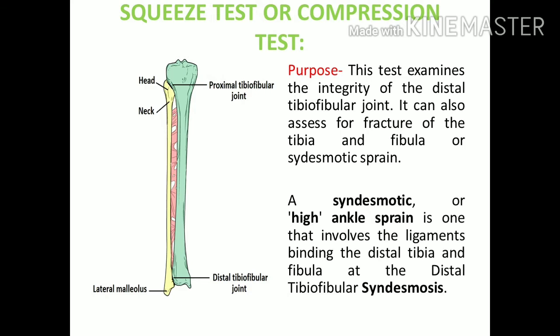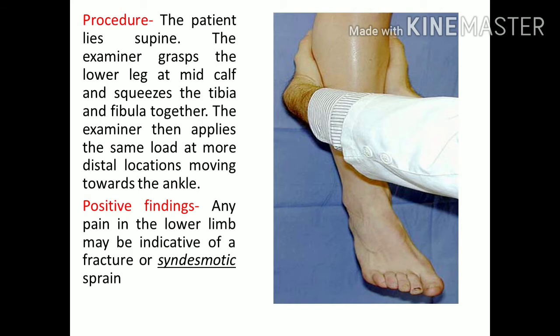The Squeeze or Compression Test examines the distal tibio-fibular joint and assesses for fractures in the lower limb bones (tibia or fibula) or syndesmotic sprain — also called high ankle sprain — which involves the tibio-fibular joint above the ankle, the interosseous ligament, or the bones themselves. The patient lies supine, and one hand is placed on the calf, squeezing the tibia and fibula together. The examiner works downwards, compressing each area until pain is produced, then repeats to confirm a fracture or sprain in the syndesmotic area.